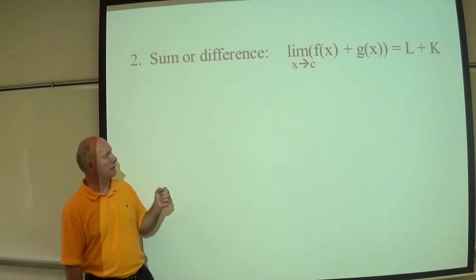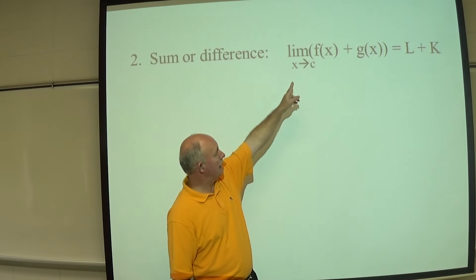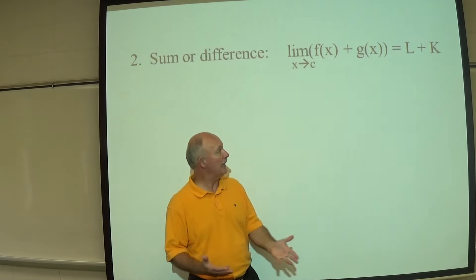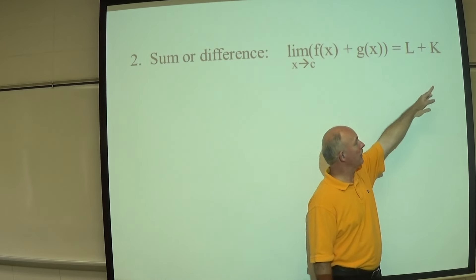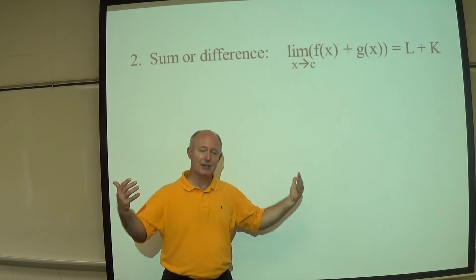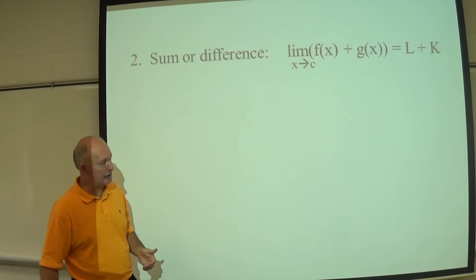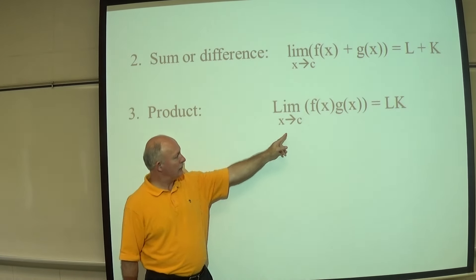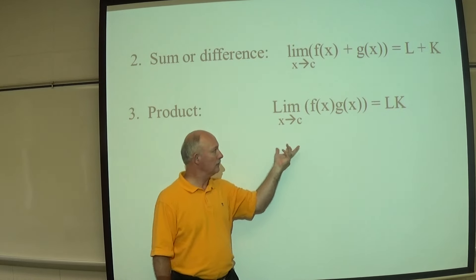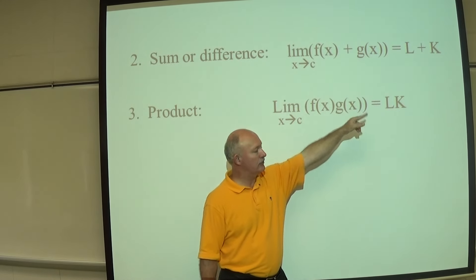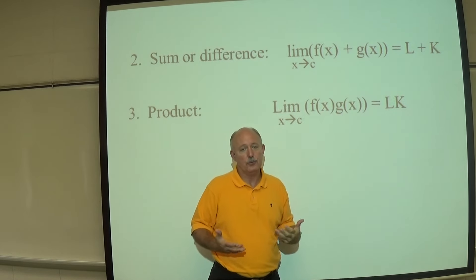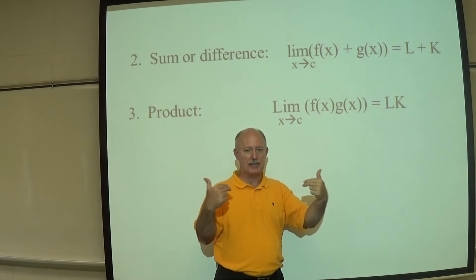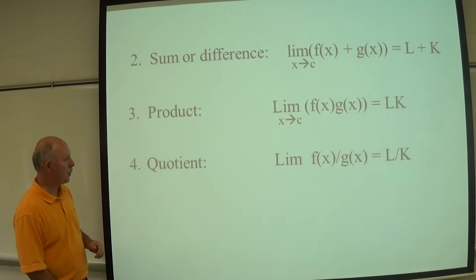The sum and difference property: the limit as X approaches C of F of X plus G of X equals L plus K — you take the limit of each function and add or subtract them. The product property: the limit as X approaches C of F of X times G of X equals L times K — if you have a product of two functions, multiply their individual limits together.